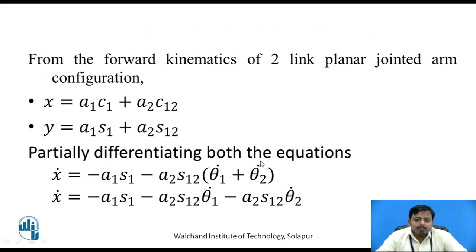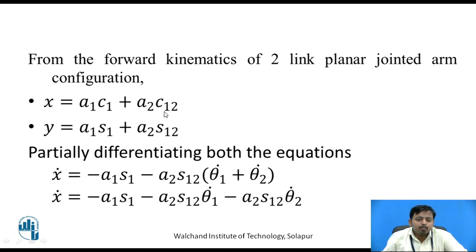From the forward kinematics of a two-link planar jointed configuration we know that x = a1*c1 + a2*c12, and y = a1*s1 + a2*s12. This is the position solution from forward kinematics of the two-link planar jointed arm configuration.